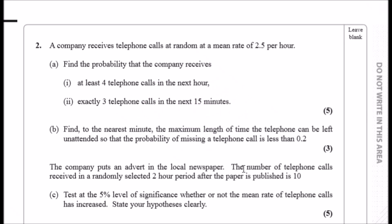Okay, here we go, question two. A company receives telephone calls at random at a mean rate of 2.5 per hour. First things first, what distribution are we using? In this case we're finding the mean rate, so this can only mean the Poisson, because the Poisson distribution only works with the lambda which represents the mean rate. So this means that lambda here is 2.5, and this is x per hour, per hour. That's very important to know.